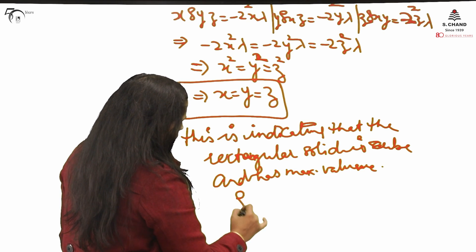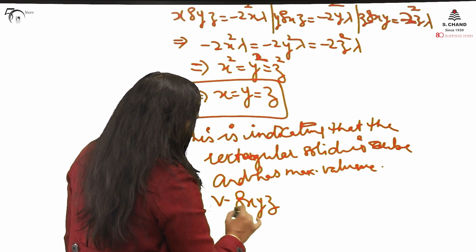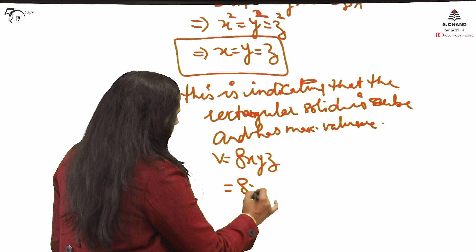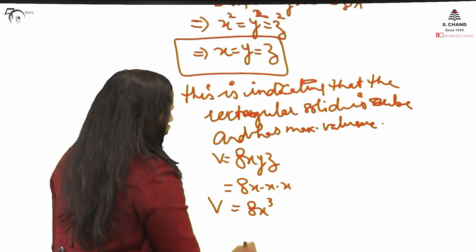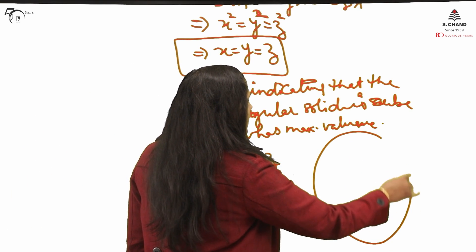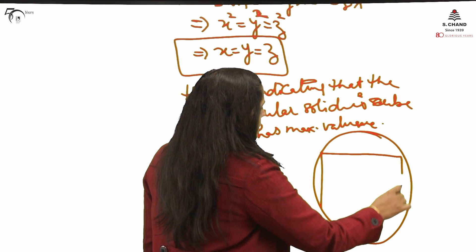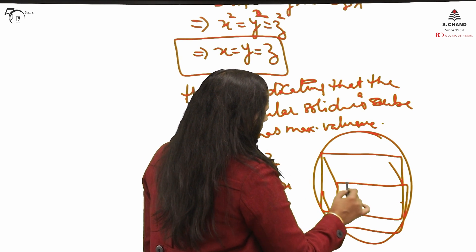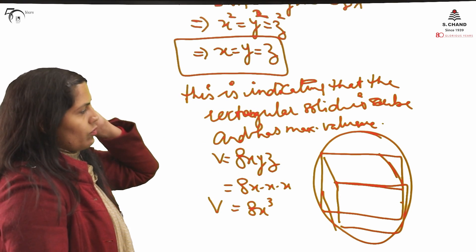So the maximum volume is 8x³ (equivalently 8y³ or 8z³). This indicates that the rectangular solid is a cube and has maximum volume. It means whenever you inscribe any solid in a sphere of some radius, it will 100% be a cube. This is the real life problem — in real life, this is the condition that must hold. So we have done a real life problem using Lagrange method of multipliers.